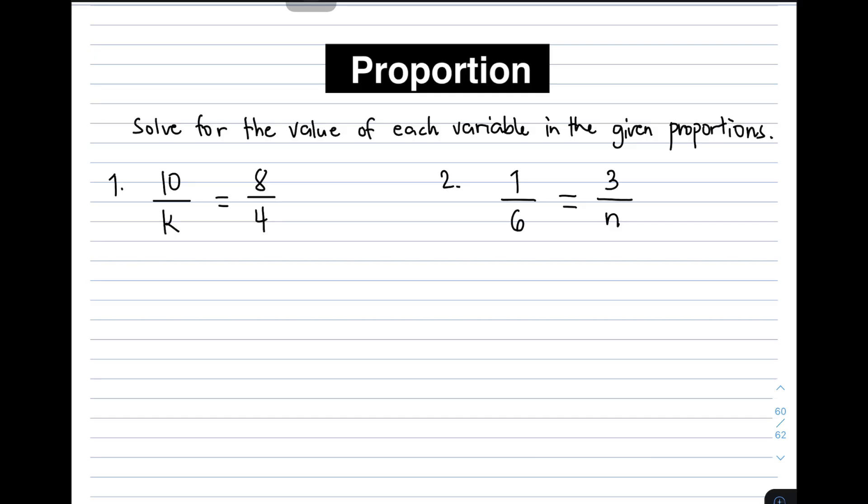We will use cross multiplication to solve for the missing variable in each proportion. So let's try using cross multiplication in answering item number 1. First, you need to multiply these two numbers. You have 8 times k. It will give you 8k. And then write equal sign.